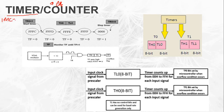There are 6 T-states in a machine cycle. In each T-state, there are 2 clock pulses produced. So 6 T-states multiplied by 2 gives 12 clock pulses per machine cycle. After 12 clock pulses, the timer resets again.